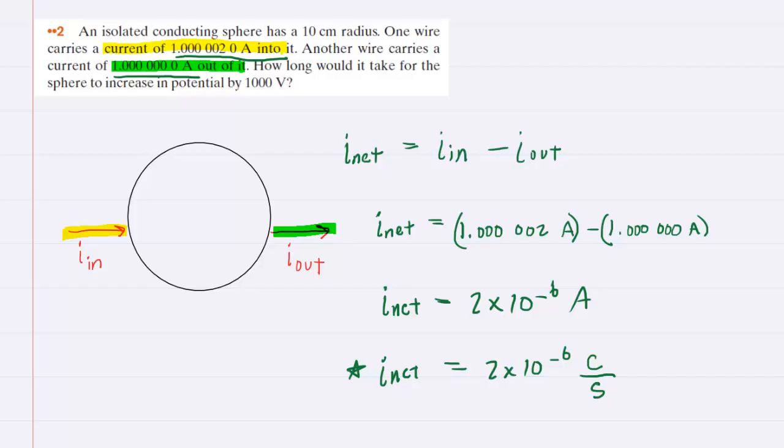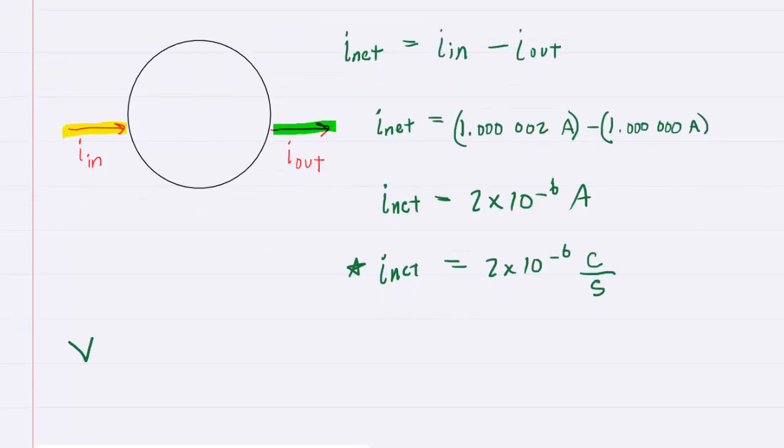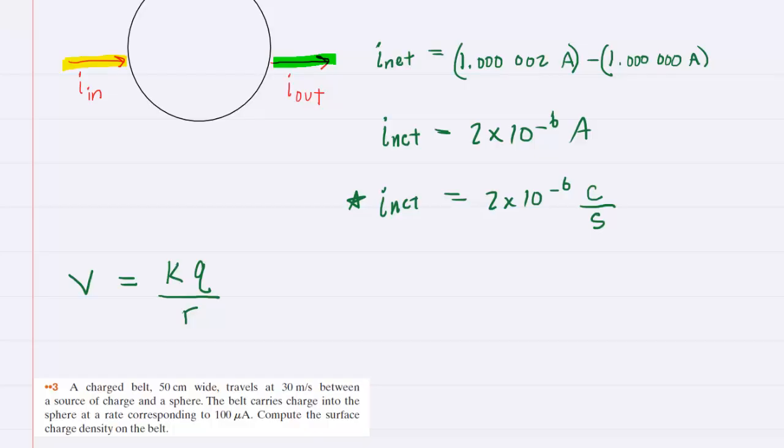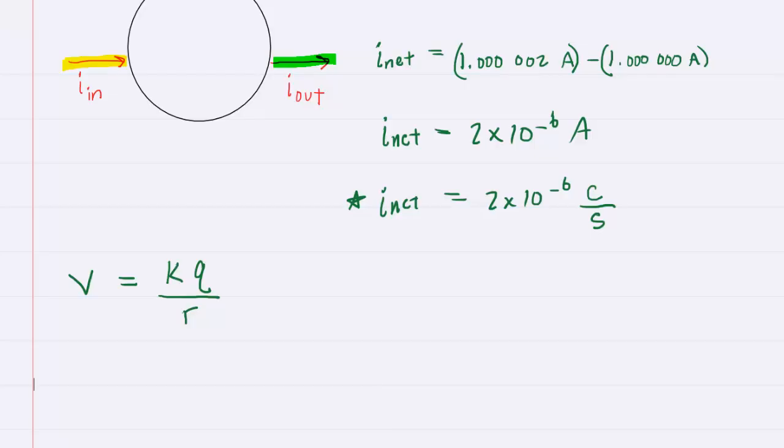Now, the next idea that we may recall from an earlier chapter is that the electric potential of a sphere, at its surface at least, is equal to the coulombs constant times the charge on the sphere divided by the sphere's radius. This question is not asking us for an electric potential, but it's asking us to figure out the increase in the potential. So that indicates a delta V, a change in the electric potential. So we can actually slightly modify this equation to indicate the change in electric potential, which would equal k times the change in charge divided by the radius.